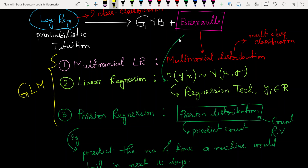For example, if we change the Bernoulli distribution: if we use multinomial distribution we get multinomial logistic regression; if we use the normal distribution we get linear regression; if we use the Poisson distribution we get Poisson regression. According to our usage we build the appropriate model. These kinds of models are all called the generalized linear model. In the next chapter we will learn it in detail.